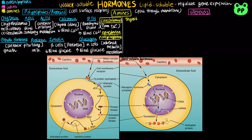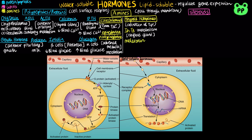Lipid-soluble amine hormones include thyroid hormones, which are derived from iodination of tyrosine. T3, or triiodothyronine, and T4, which is thyroxine, function in regulating metabolism and are secreted by the thyroid glands. Melatonin, which is derived from tryptophan, is secreted by the pineal gland and functions in regulating the circadian rhythm and pigmentation.